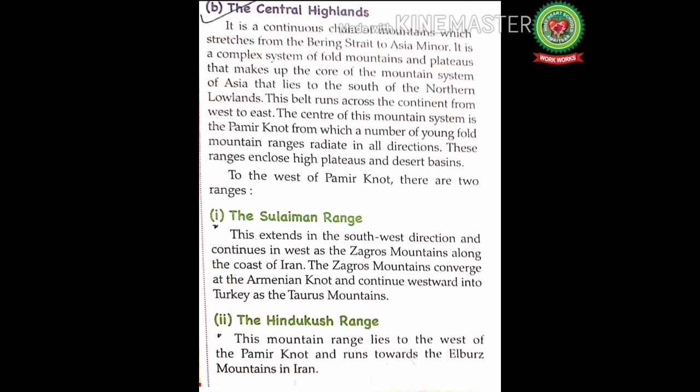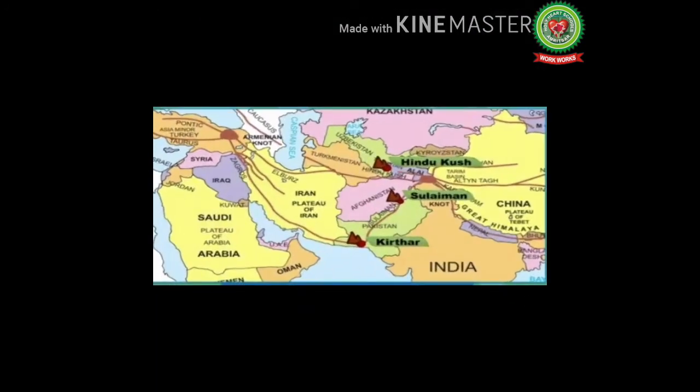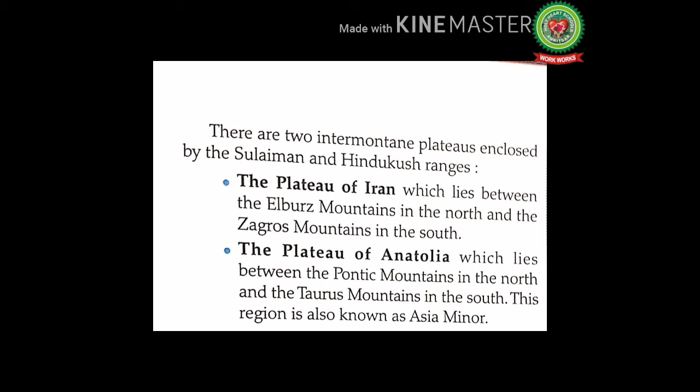Looking at the map, the Suleiman Range and the Kirthar Range of Pakistan are the southern extension of the Hindukush mountain system and rise to form the eastern edge of the Iranian plateau. The Zagros mountains are a long mountain range in Iran, Iraq, and southeast Turkey, with a total length of 1,600 km. The Hindukush Range lies to the west of the Pamir Knot and runs towards the Alborz mountains in Iran.